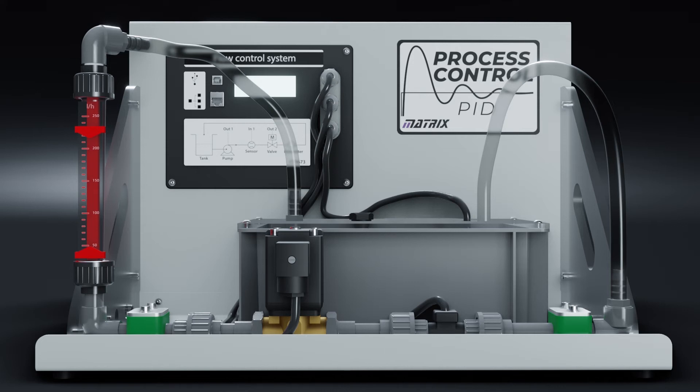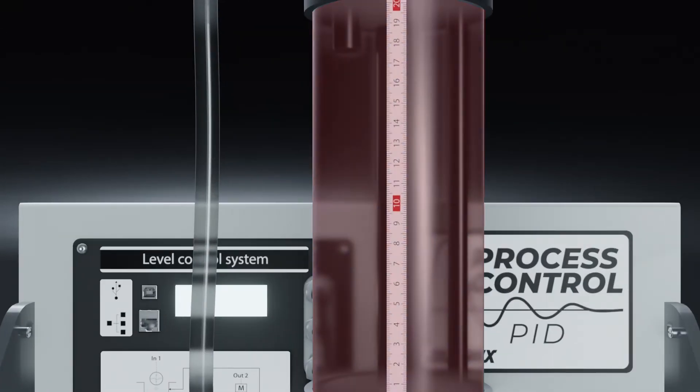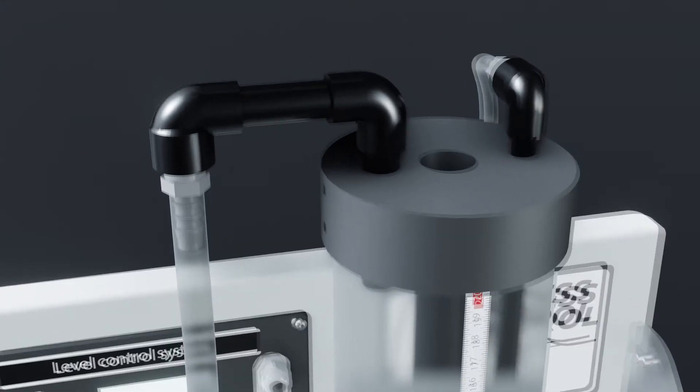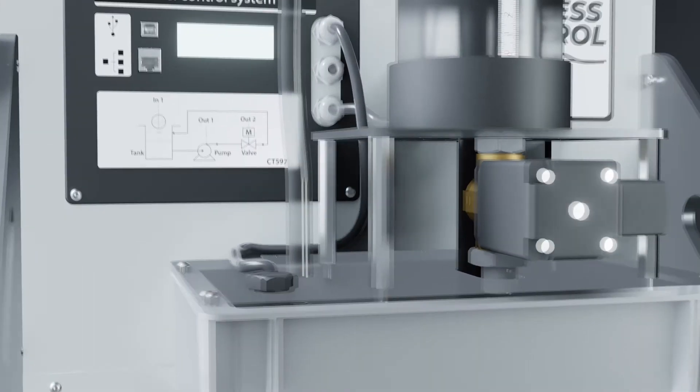The level system consists of a reservoir water tank, a variable speed pump, a pressure-based level sensor, and a clear process vessel with a scale. A proportional valve provides the process vessel drain. An overflow pipe in the process vessel prevents it being overfilled.